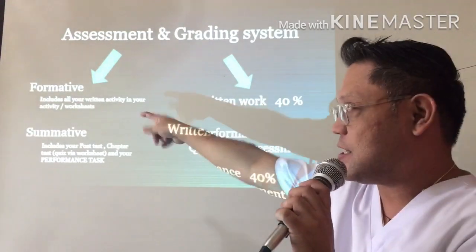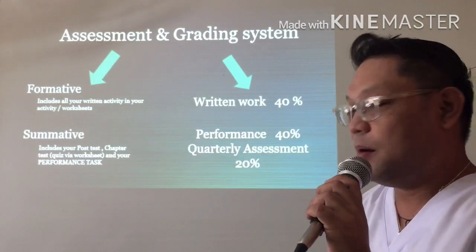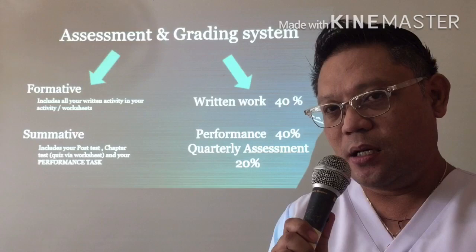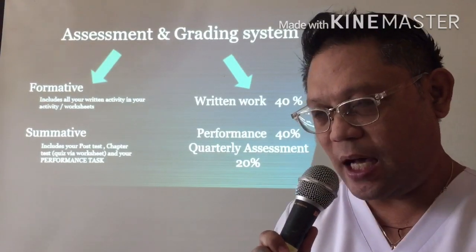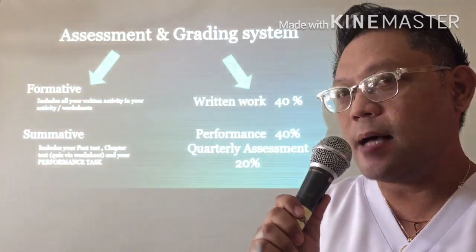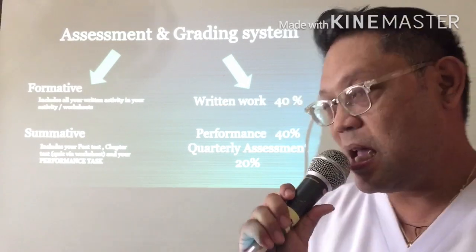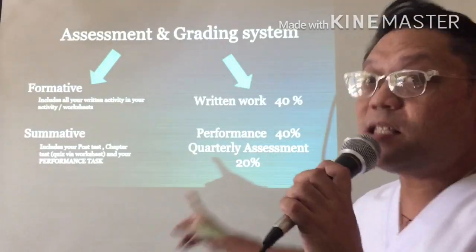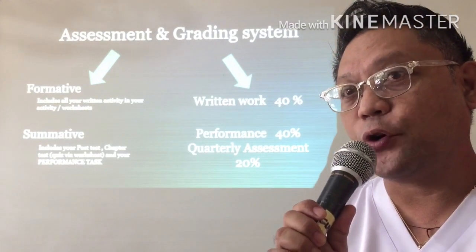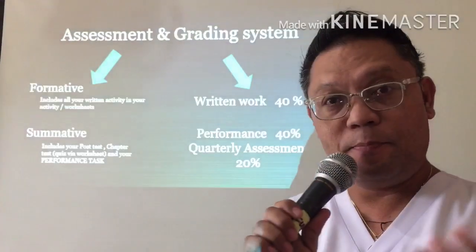The 40% written work covers mostly from your formative, and if we have a summative test or post-test via your worksheets. Then 40% is your performance — every written activity, experimentations, or your participation online, such as making comments and likes or subscribing and making comments on posts, is considered as part of your performance test. The quarterly assessment is 20%. This 20% will only be announced to you when it will happen, because in the modular class it is not required yet for you to come due to the COVID-19 protocol. It will be announced later through the Polinian page.